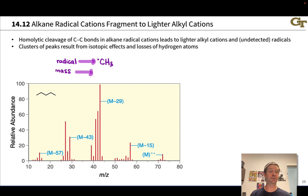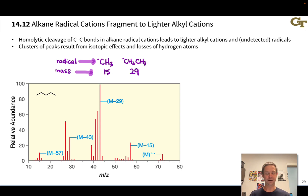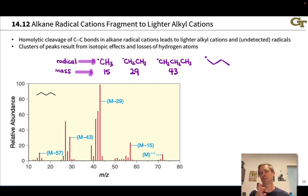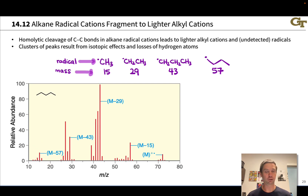The methyl radical CH₃ has a molar mass of 15 g/mol, so M minus 15 tends to indicate the loss of a methyl radical from the molecular ion. The ethyl radical has a mass of 29 g/mol, so M minus 29 means we've lost CH₂CH₃. Propyl is 43 g/mol, giving an M minus 43 peak corresponding to loss of a three-carbon radical. Finally, the butyl radical — regardless of where the unpaired electron shows up, primary or secondary — has a molar mass of 57 g/mol for any four-carbon saturated radical.